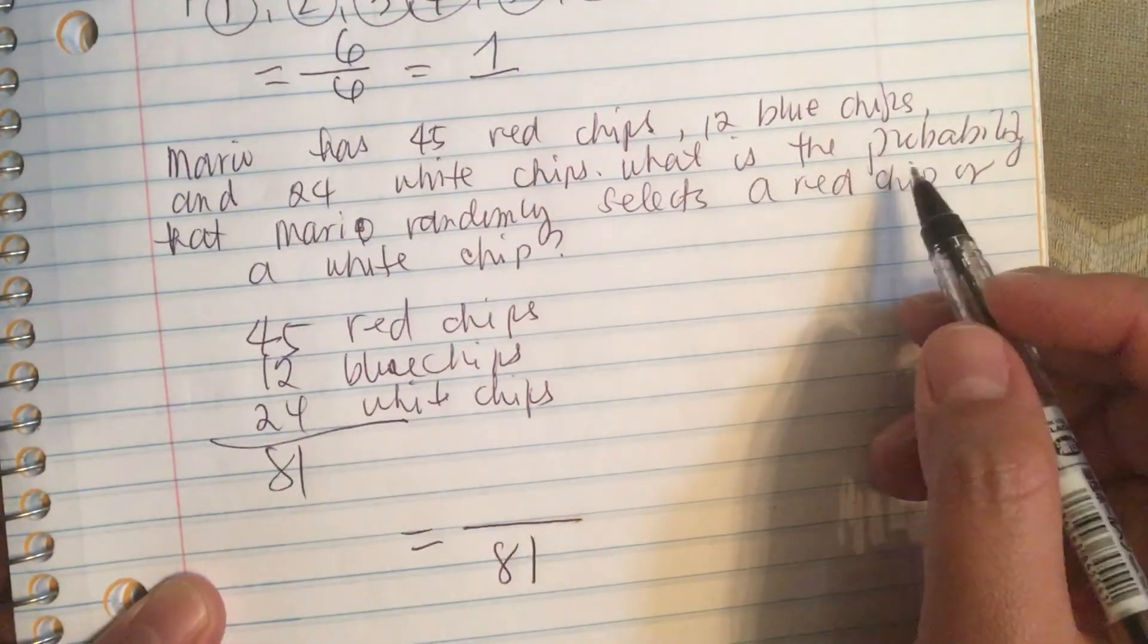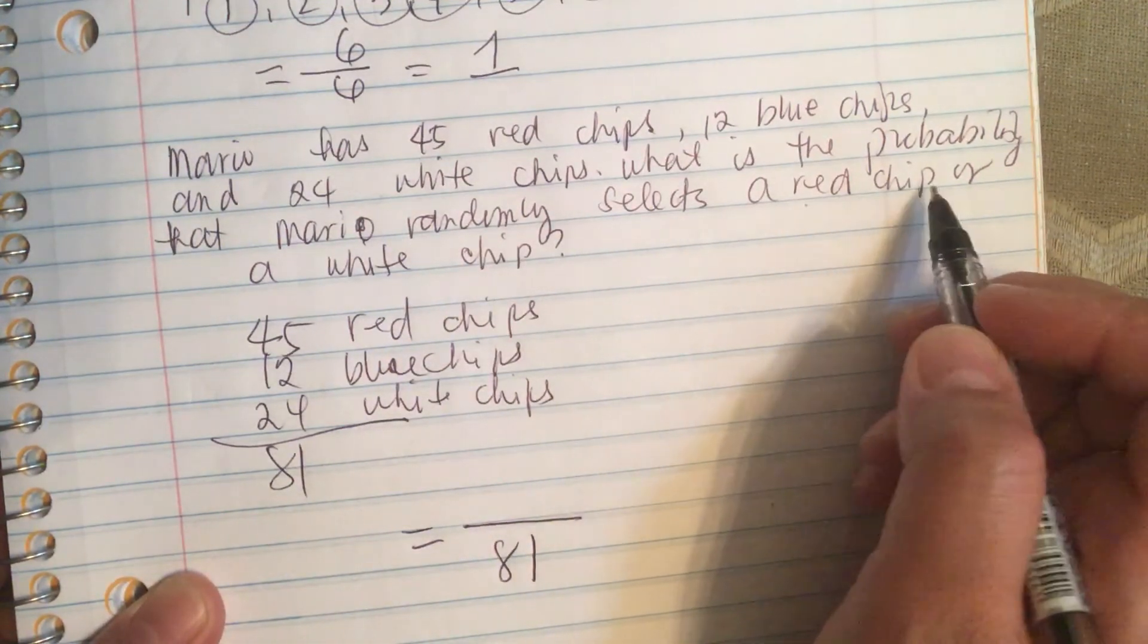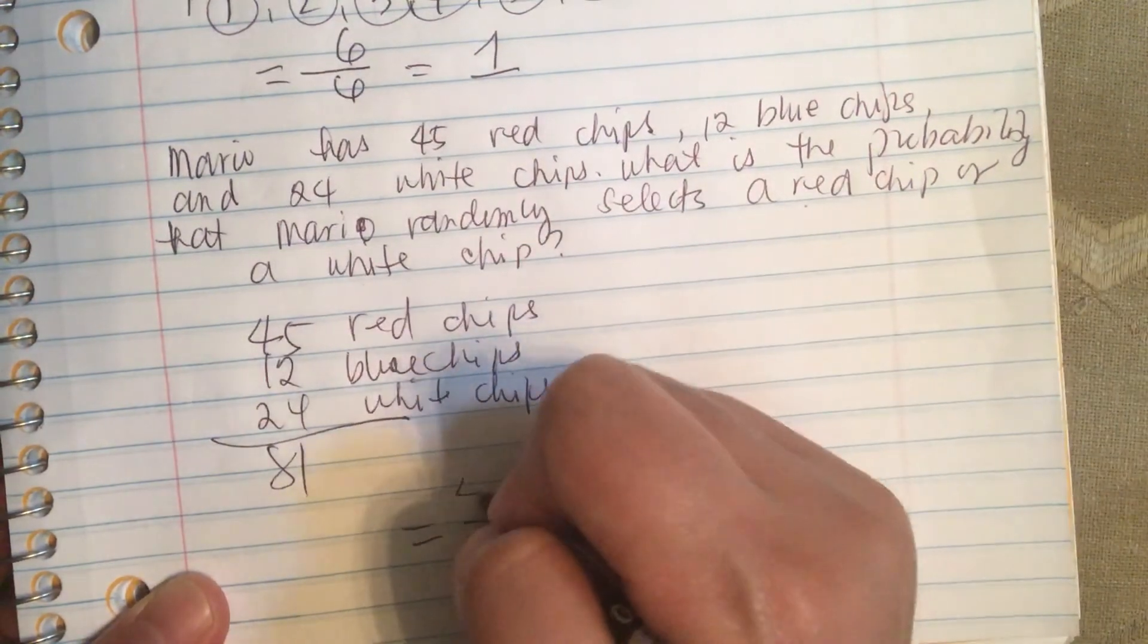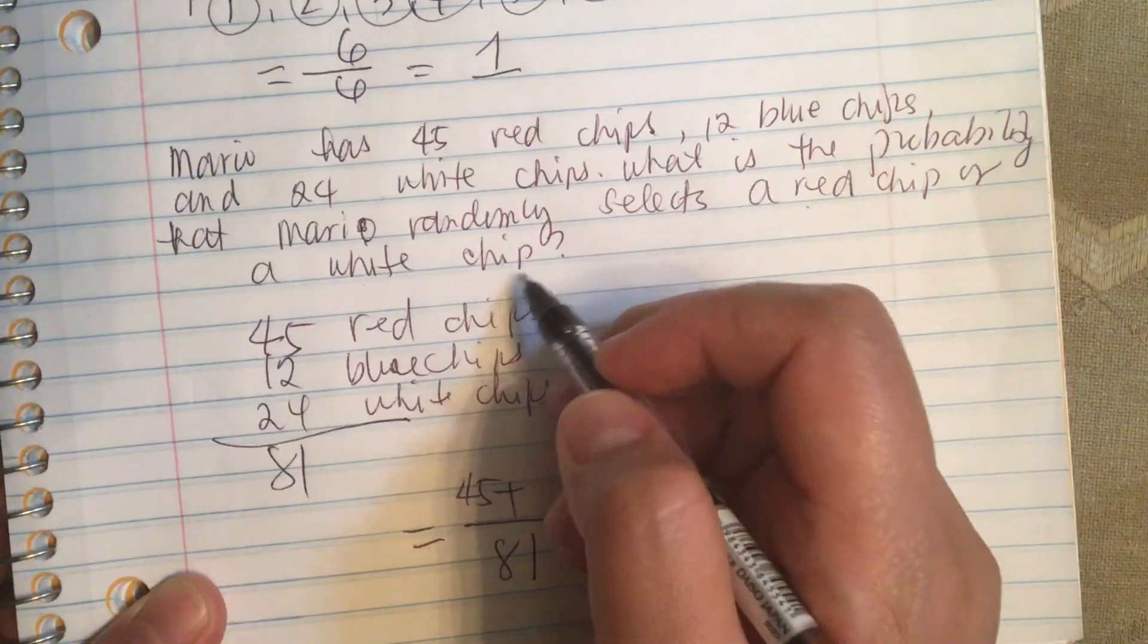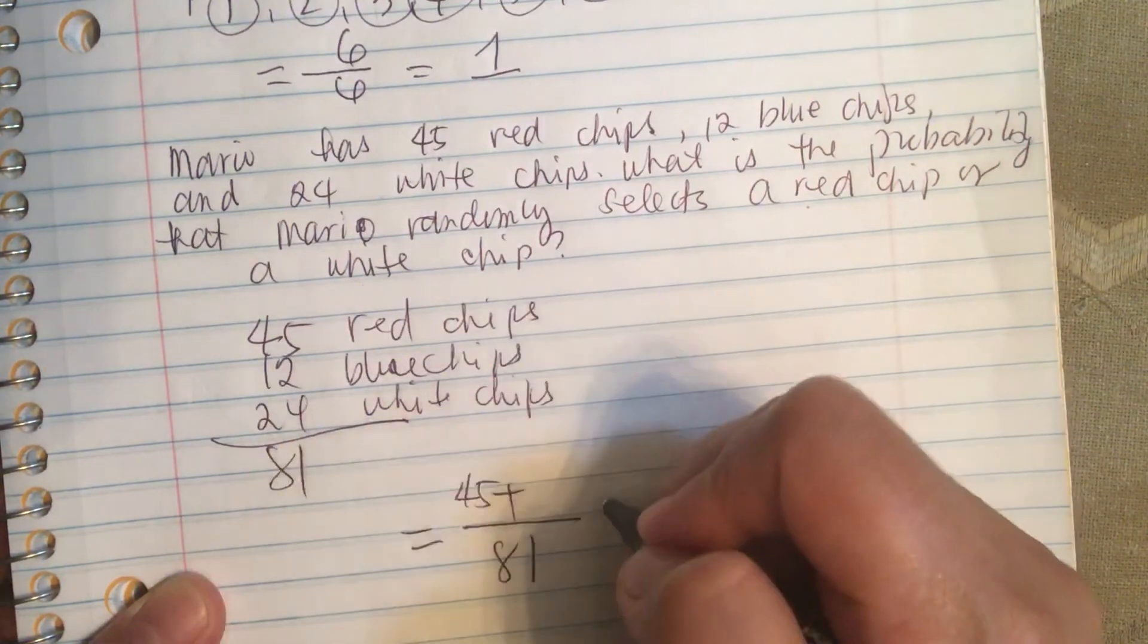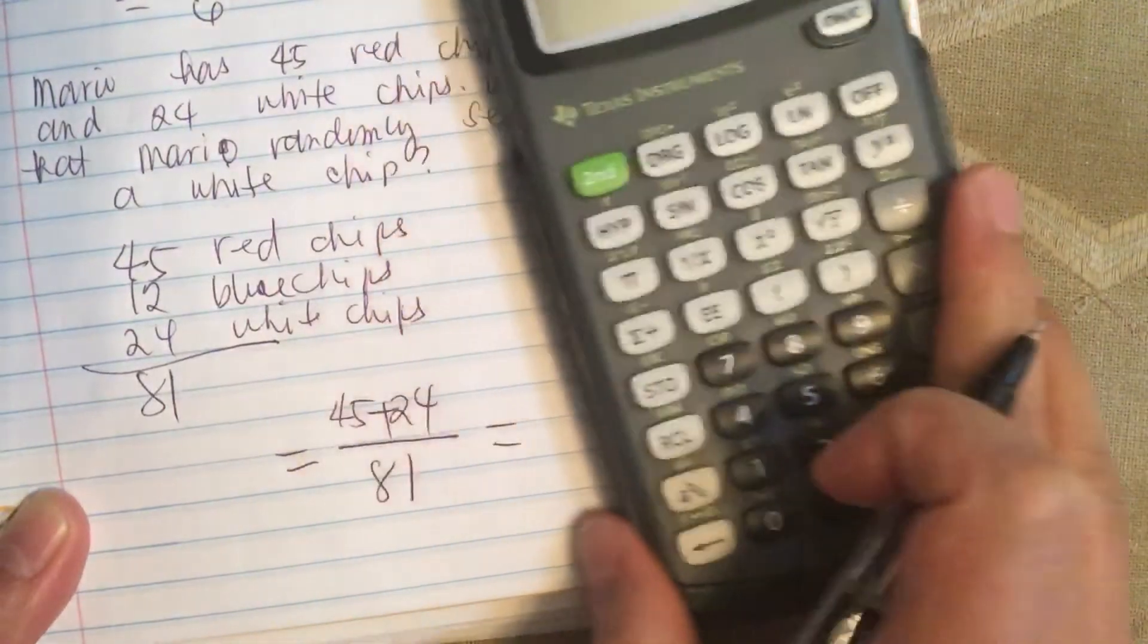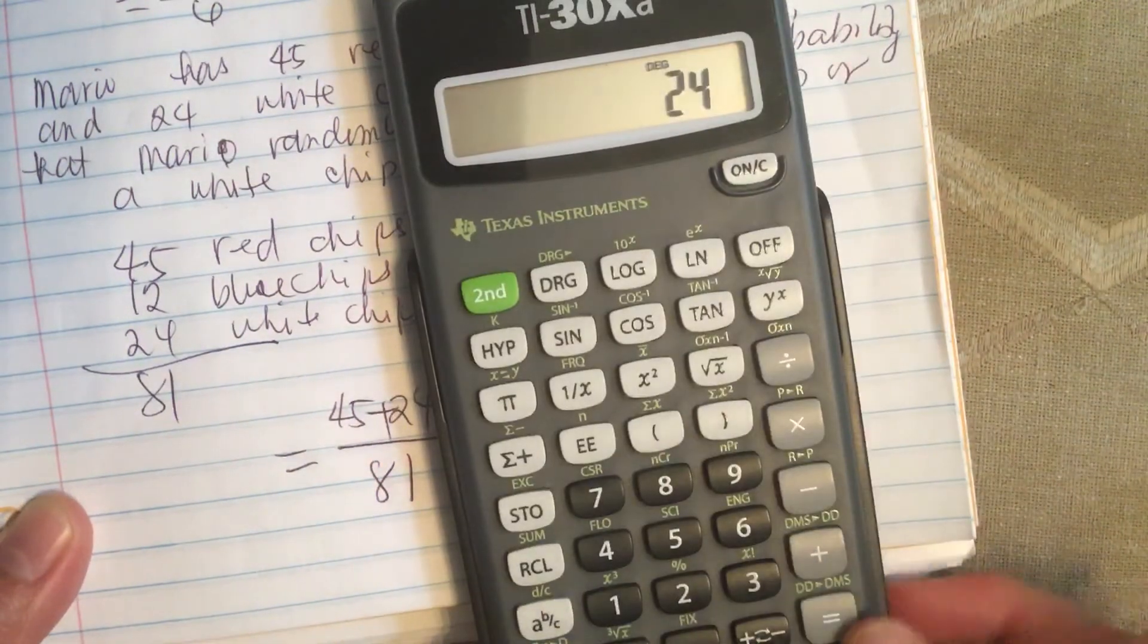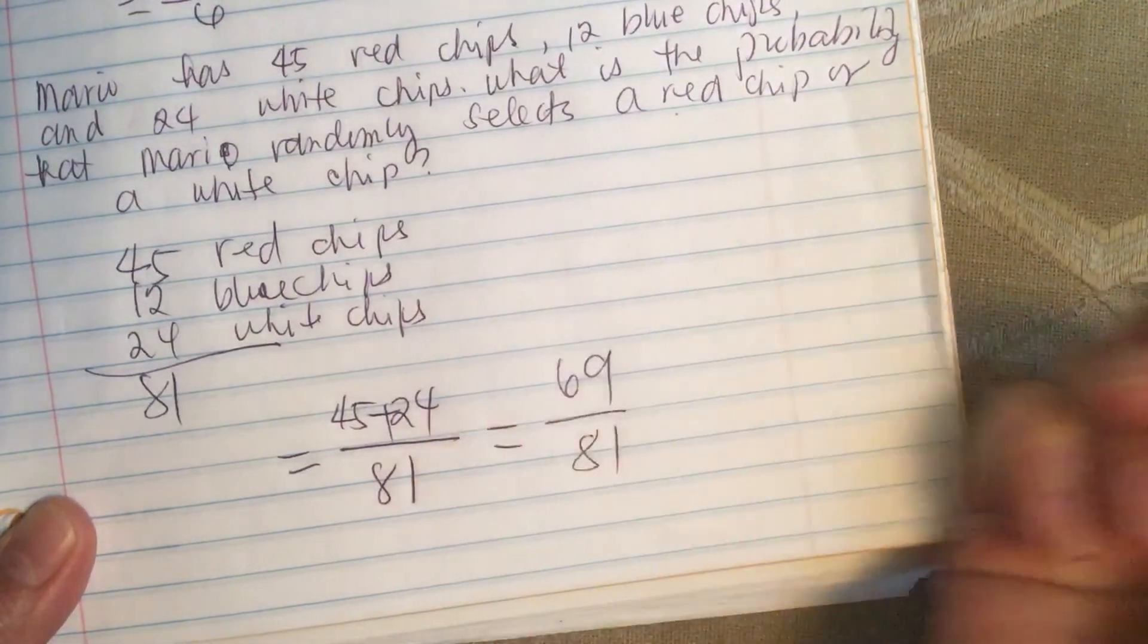So they ask the probability of a red chip or a white chip. There are 45 red chips or a white chip, so there are 24 white chips. So 45 plus 24 is equal to 69 over 81.